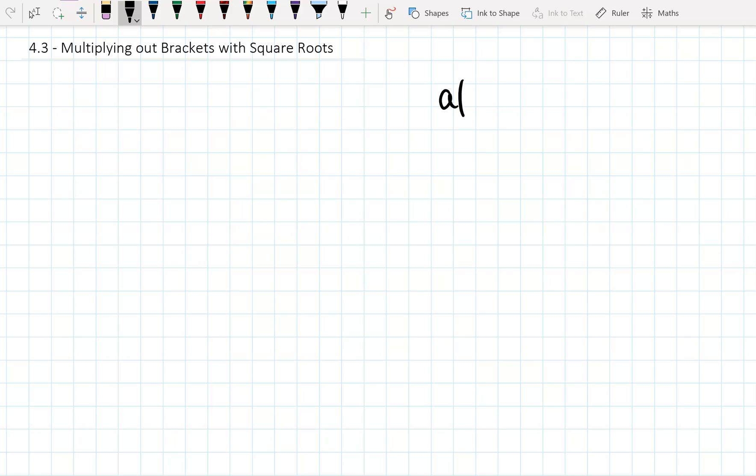Firstly, if we have a(b + c), when we multiply these brackets out, you do a times b, and then we add a times c. So that's pretty straightforward. We get ab plus ac.